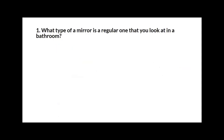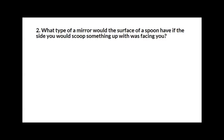Here are your questions. What type of mirror is a regular one that you look at in the bathroom? That's going to be a plane mirror. What type of mirror would you have if you have a spoon and you're looking at it like you're about to eat some cereal — that curving around towards you — which kind of mirror is that? That would be a concave mirror. If you get a really huge spoon, it could curve around you — it's going to be a concave mirror.